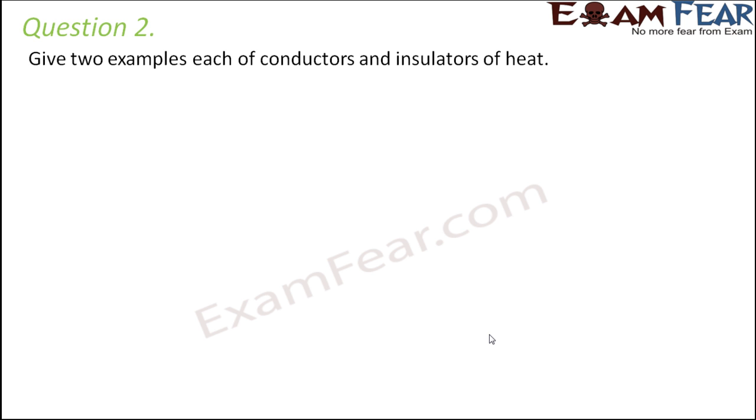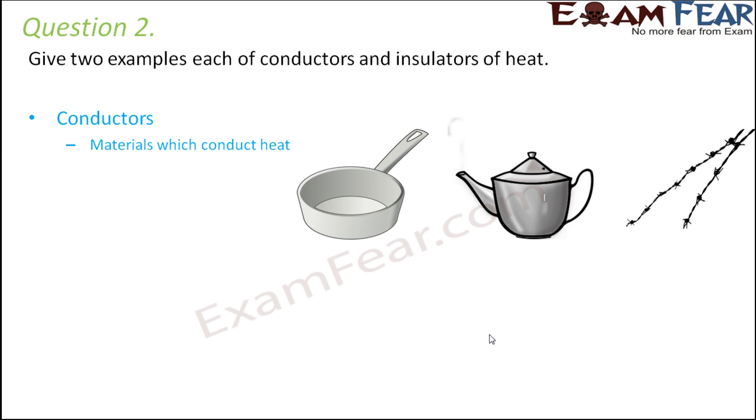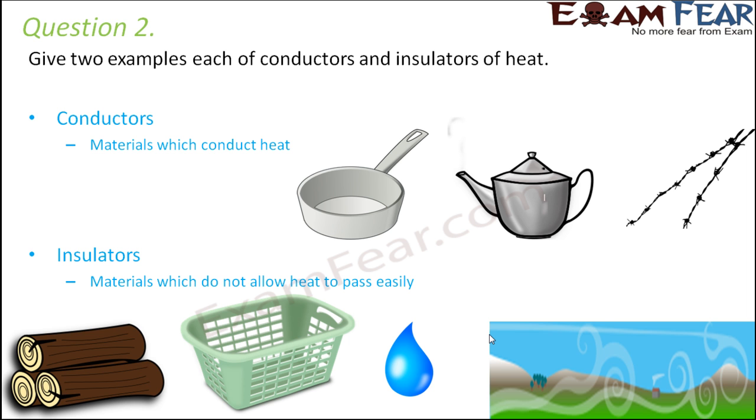Question number two: give two examples each of conductors and insulators of heat. So conductors, those which allow heat to pass through them, their best examples would be the metals, for example aluminium, copper, iron, they are all good conductors of heat. If you talk about insulators, they do not allow heat and therefore they are not suitable for cooking purposes, like plastic, wood, air, water, they are all poor conductors or insulators of heat.